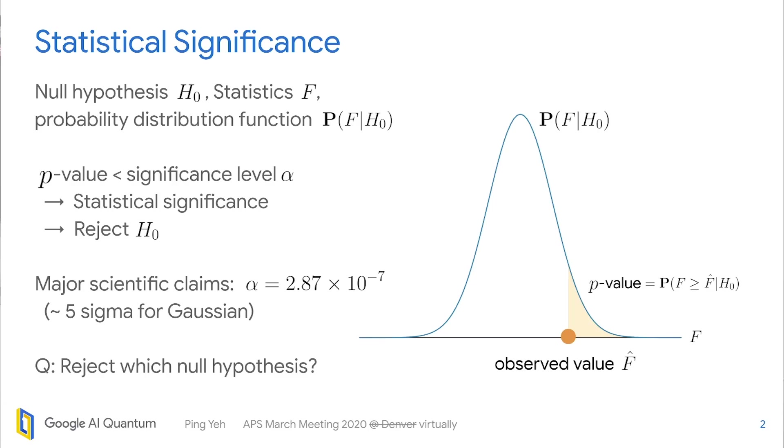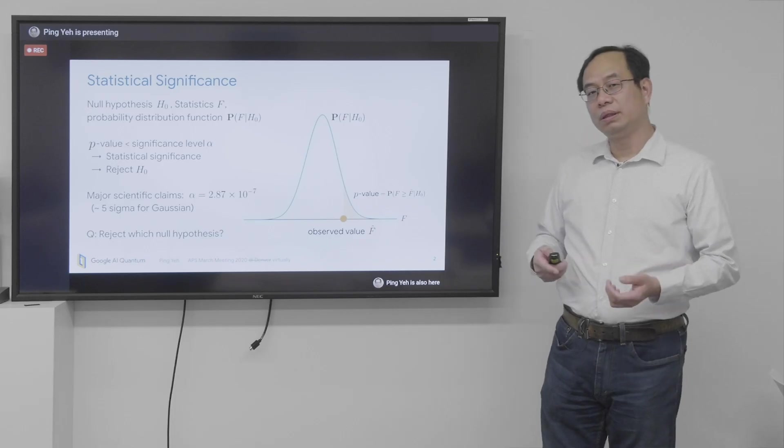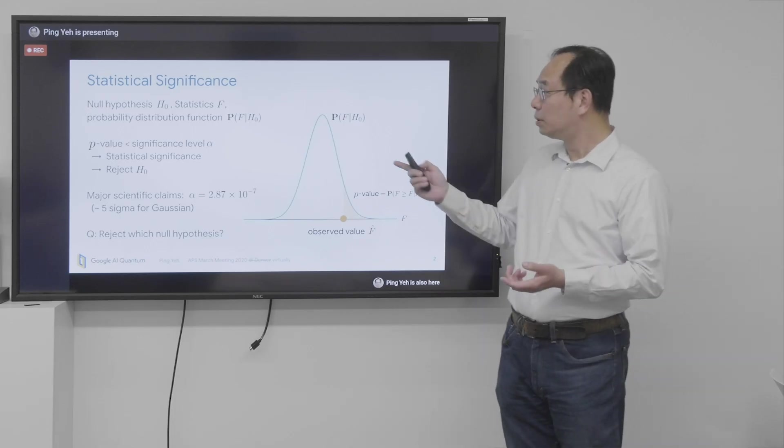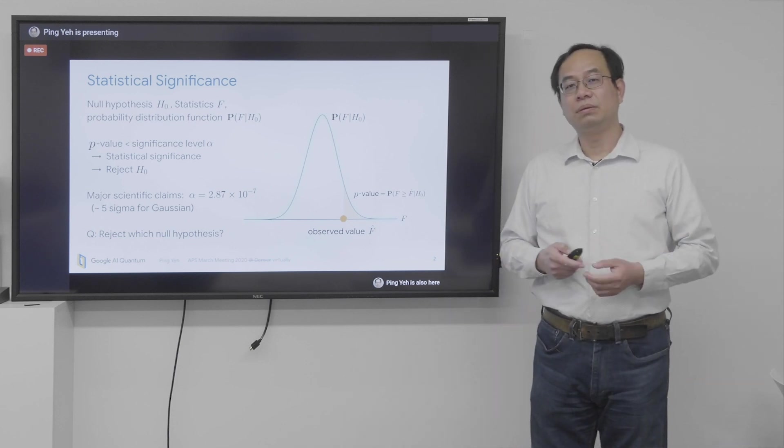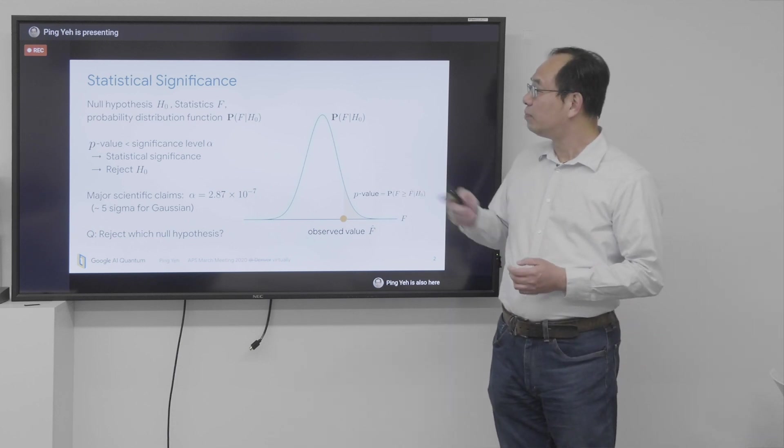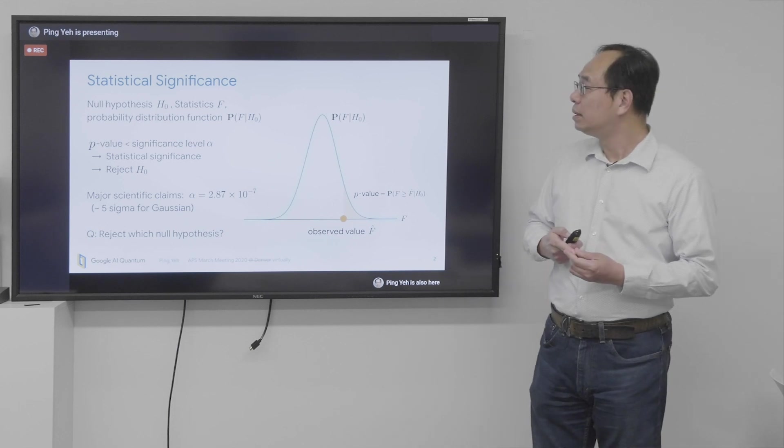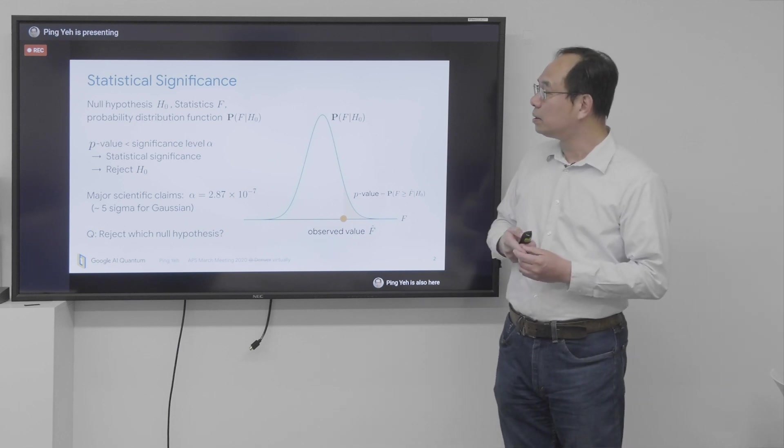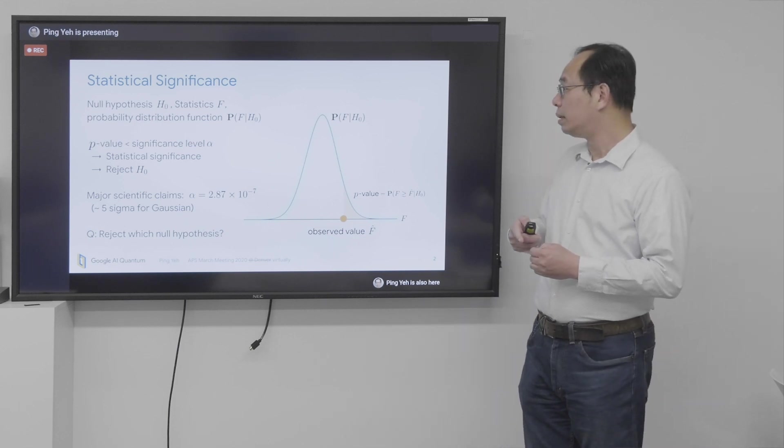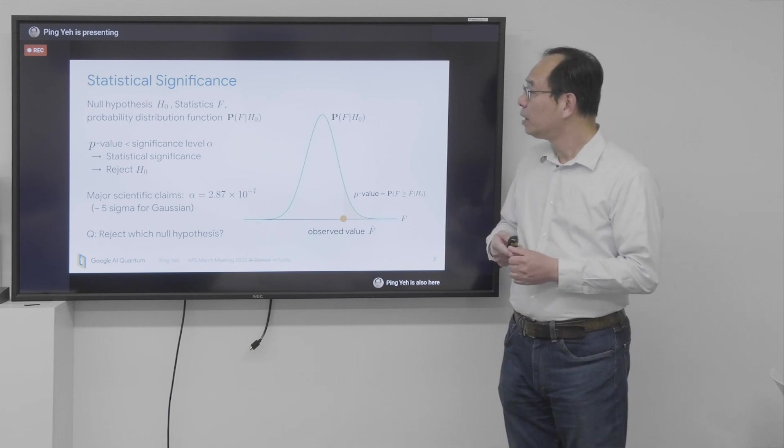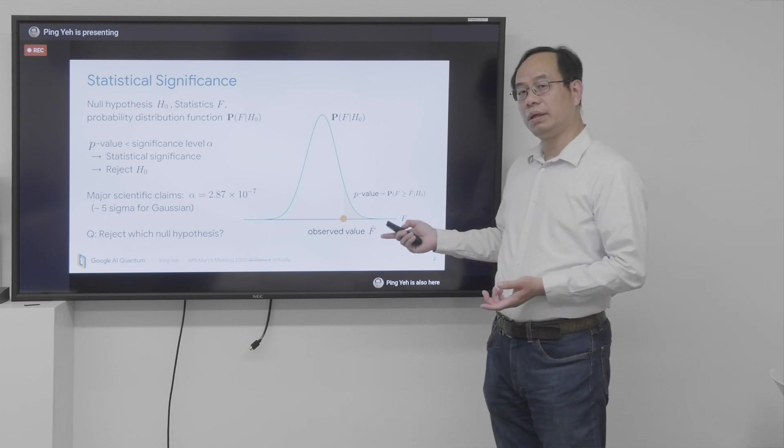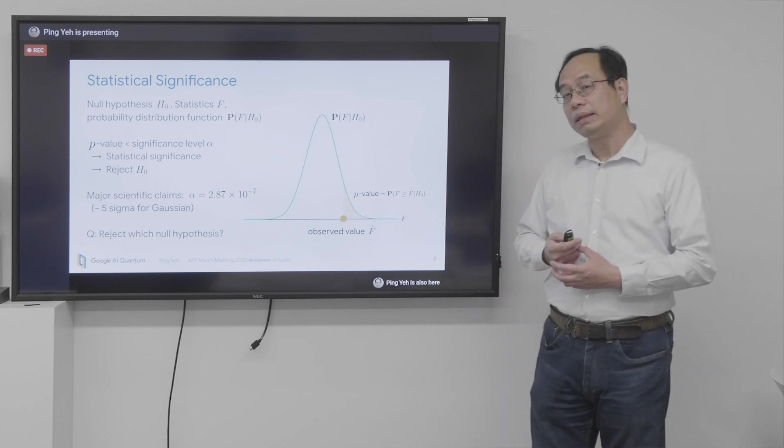So a quick reminder on statistical significance. You start with the null hypothesis H0, or Hnull, which means there's nothing interesting. And you have a statistic called F, and also a probability distribution function of F given Hnull. Then you go ahead and measure F in your data. Let's say you come up with a value of F hat.